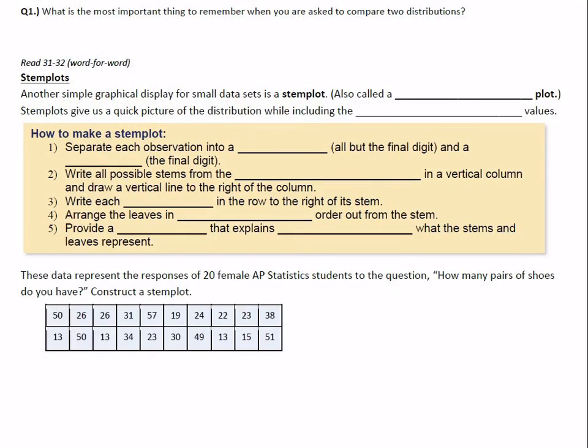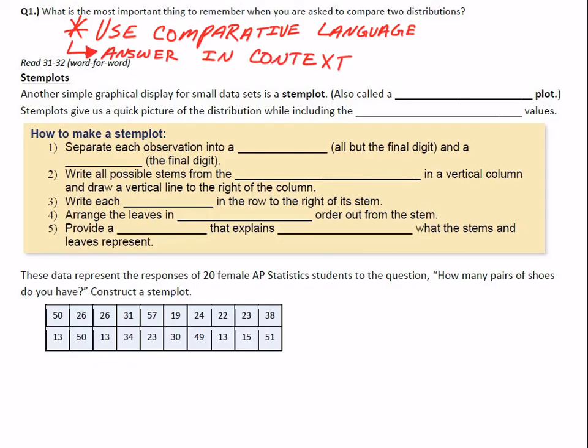That takes us to this Q1 here. What is the most important thing to remember when you're asked to compare two distributions? Well, mine's kind of actually two-fold. One, use comparative language. Don't just list facts. The other is make sure that when you do that, you answer in context. Don't just give me numbers by themselves. Give me context of the scenario. For example, 26 people per house, as opposed to just listing the number 26. Alright, we're going to stop here. That is all for these notes. I'll see you in class.